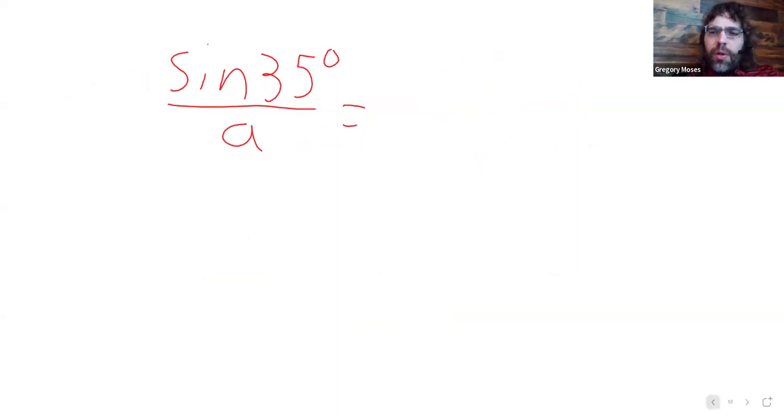What would be more useful than that would be if we could use this angle, because we know this side, 20 miles. And that angle isn't labeled, but we can find it.